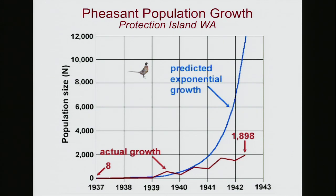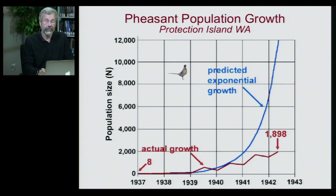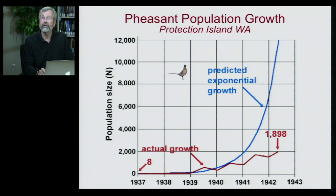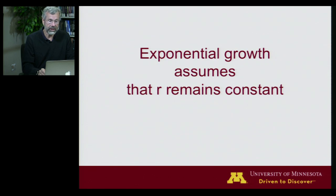Now let's look at some real data. Here is an island in the Pacific Northwest in Puget Sound called Protection Island in Washington State, where eight pheasants were added to the island in 1937. For a while the population followed exponential growth — the blue line is the predicted based on the R of pheasants, and the red was the actual observed population size. At least for about three or four years the population did nearly grow exponentially, but after a while there was a huge disparity between the two. The reason we get this disconnect between observed and predicted is often because we made a very naive assumption: that R will remain constant generation after generation.